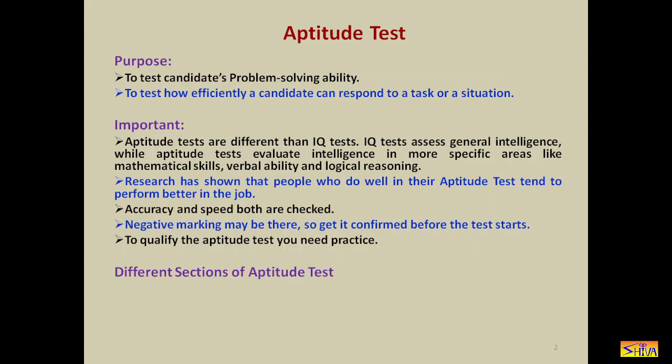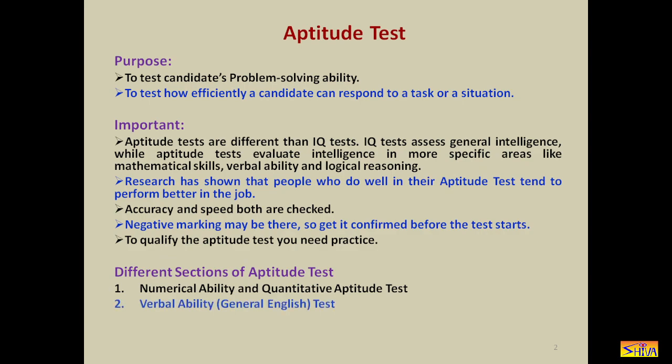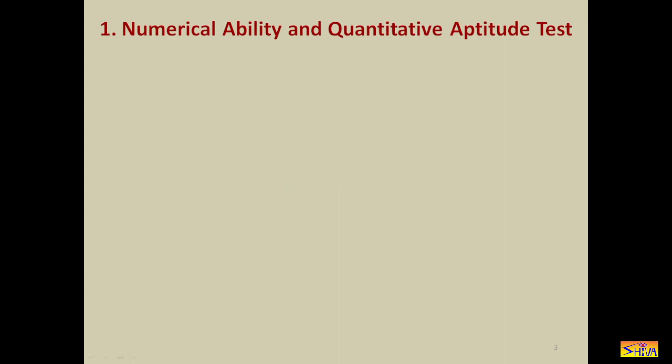Now let us see what the different sections of the aptitude test are. The first section is numerical ability and quantitative aptitude, which is compulsorily part of all campus recruitment processes. The second is verbal ability, that is general English. Some companies do not conduct this verbal ability test. The third is logical reasoning. This does not mean companies conduct three separate tests — in the same paper, these three sections will be present, and questions can be intermixed.